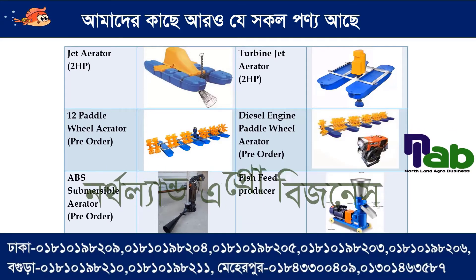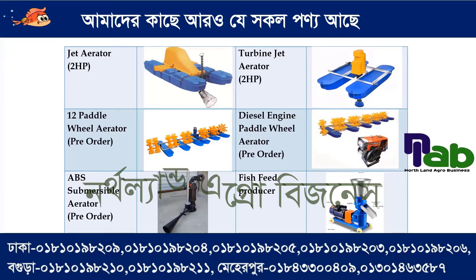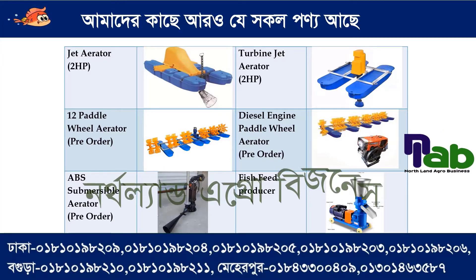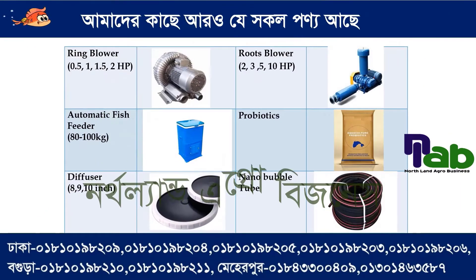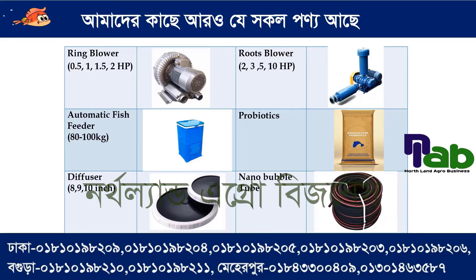Diesel engine pedal wheel aerator. ABS submersible aerator, fish feed producer or fish feed maker, sinking and floating. Ring blower 0.5, 1, 1.5, 2hz power ring blower. Root blower 2hz power, 3hz power, 5hz power, 10hz power. We have a charge aerator, fish feeder 80g, probiotics.